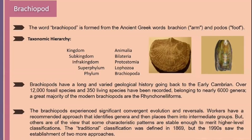The word Brachiopoda comes from the Greek words 'brachion' and 'podos', belonging to the Animal Kingdom phylum. Brachiopoda has roots in early embryology, with around 12,000 fossil species recorded and 3,500 living species.